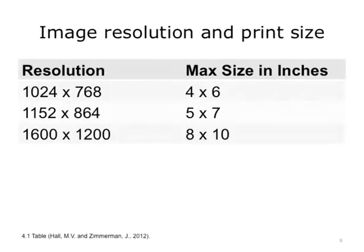Pixels per inch, PPI, and dots per inch, DPI, are technically not the same thing, but they are often used interchangeably. PPI refers to the number of pixels found in one inch of a digital image or a computer monitor. While PPI does not affect the actual quality of the image itself, it can affect how an image appears on a web browser or in print. DPI, on the other hand, refers to the amount of resolution a printer is capable of outputting.